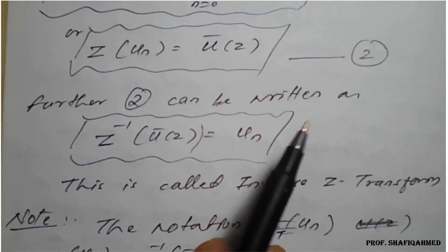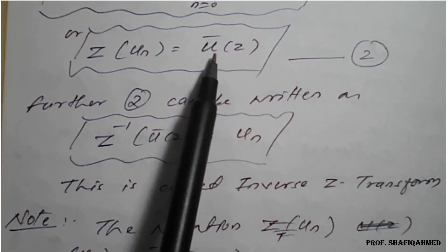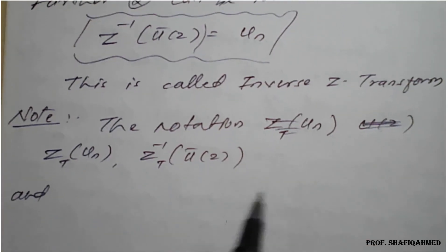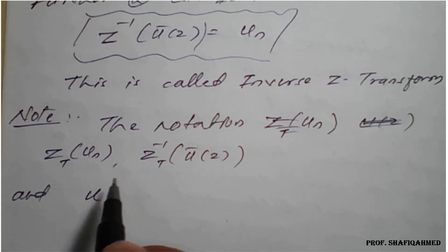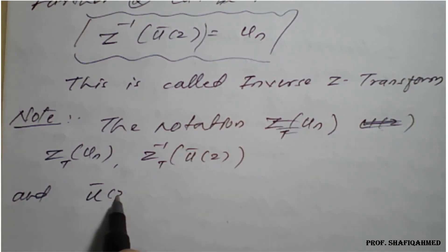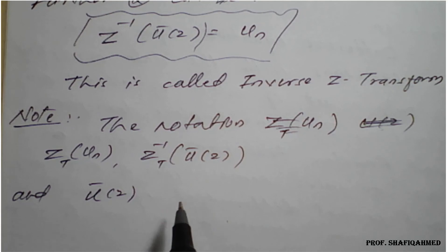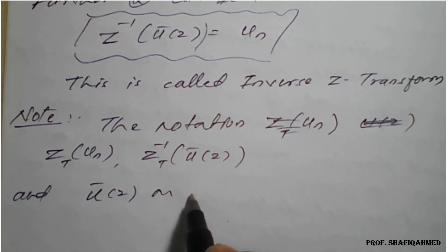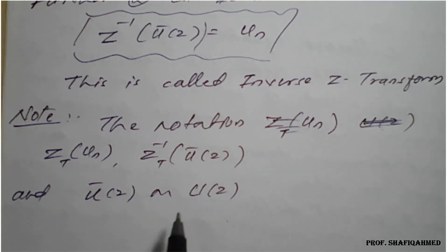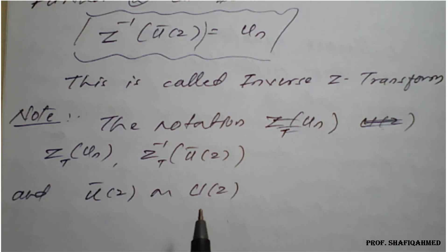So I have taken here u'(z)—small u'(z) can also be used as capital U(z) also. So capital U(z) is nothing but small u'(z). These are the small notations they may use while framing the problems here.